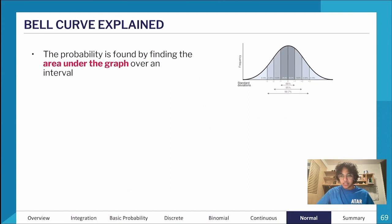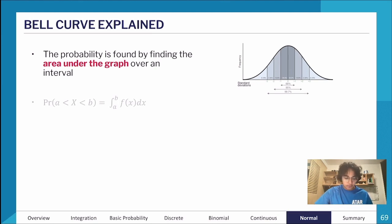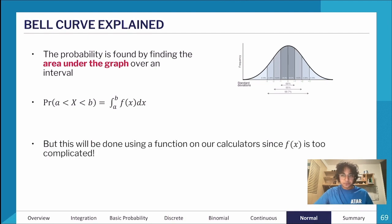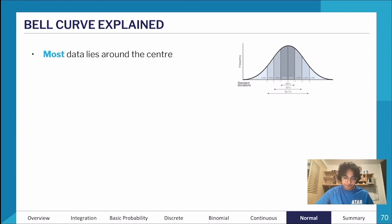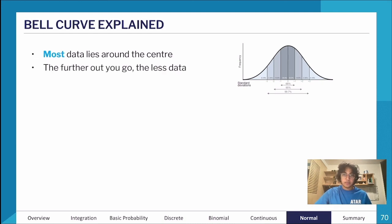The probability in continuous functions is the area under the graph for some interval. Since the normal distribution function is so complicated, it's done using a calculator function — you'll have a normal PDF function available. With the bell curve, most data lies around the mean: within one standard deviation you capture 68%, within two you capture 95%, so a lot of your data is centered around the mean.